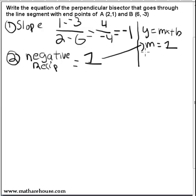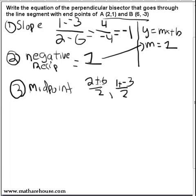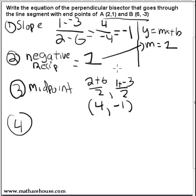With the slope, if we can get a point, we can find the y-intercept. The perpendicular bisector goes through the midpoint of the original segment, so let's find that midpoint. Add up the x-values and divide by 2: (2 + 6) / 2 = 8 / 2 = 4. Add up the y-values and divide by 2: (1 + (-3)) / 2 = -2 / 2 = -1. So the midpoint is (4, -1). We have a point on our new line and we have its slope.